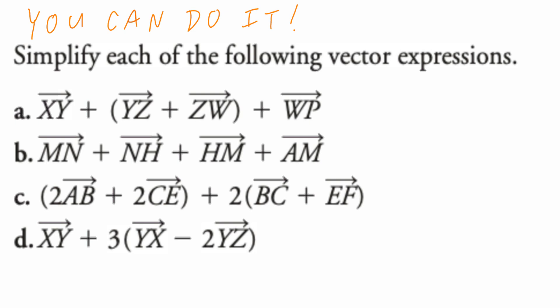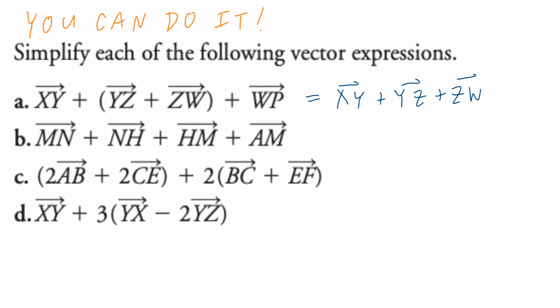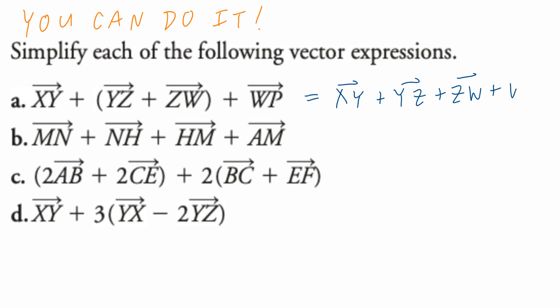Part A, vector XY plus, in brackets, vector YZ plus vector ZW, close bracket, plus vector WP. Step one, take out the brackets. Vector XY plus vector YZ plus vector ZW plus vector WP.